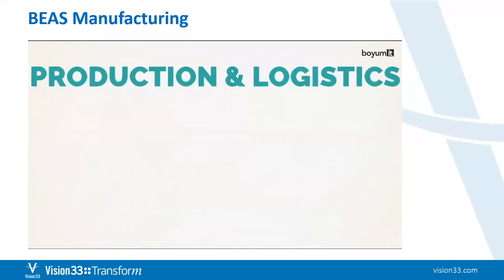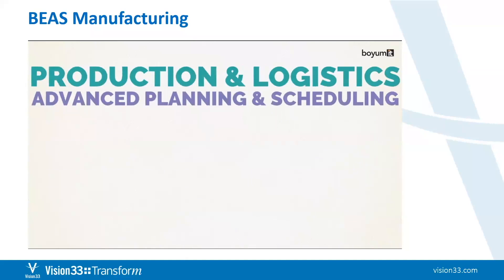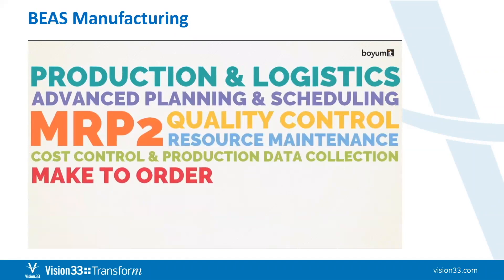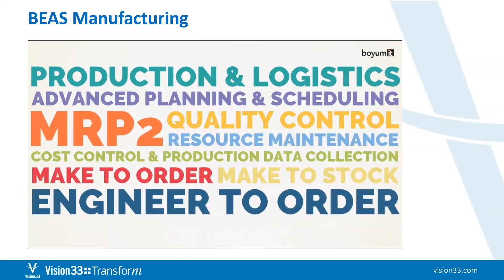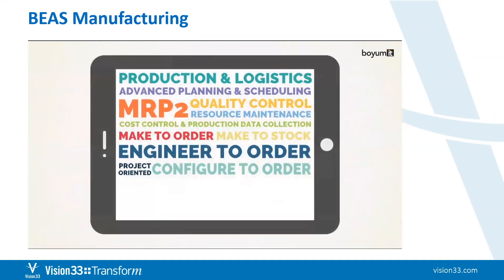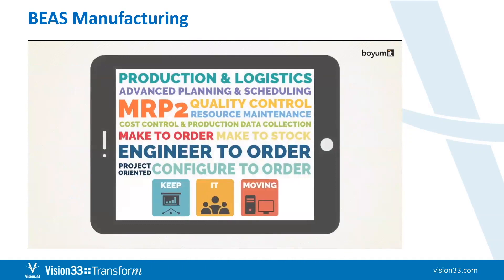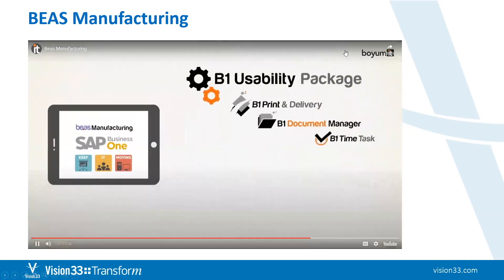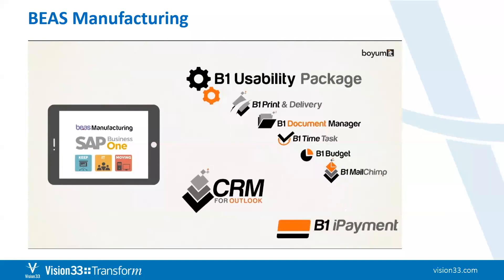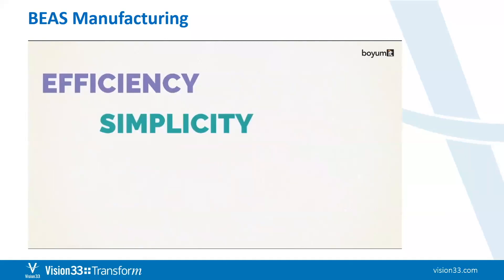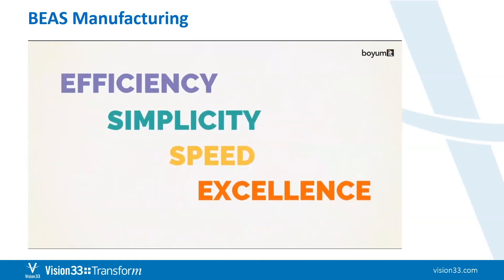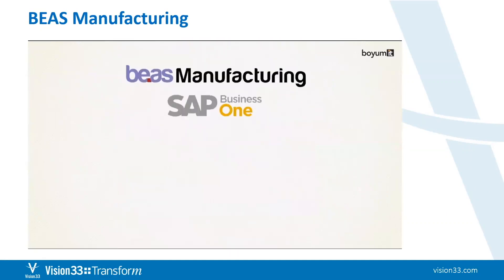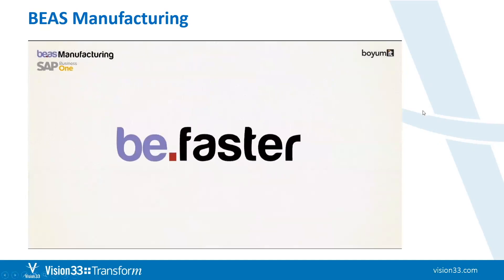Combining comprehensive functionality for production and logistics, including advanced planning and scheduling, MRP2, quality control, resource maintenance, cost control, and production data collection for make-to-order, make-to-stock, engineer-to-order, project-oriented, and configure-to-order business processes. With a suite of mobile apps to keep your business running while on the move, every scenario has been explored and accounted for. With the added power of BoyumIT's world-renowned customisation tools for SAP Business One, you can rest assured that the way your business runs can be more efficient, simpler, faster, and better without compromising the uniqueness that makes it stand out. Bayes Manufacturing with SAP Business One — be easier, be simpler, be faster, Bayes.